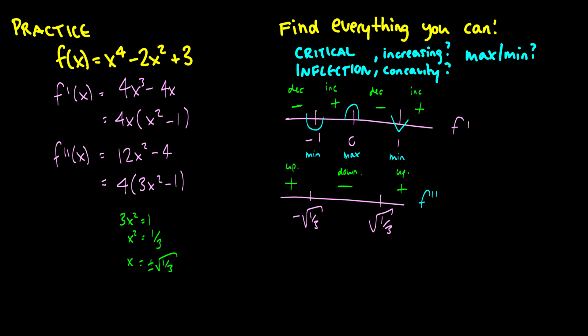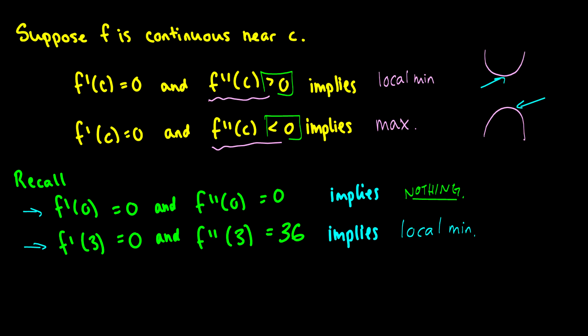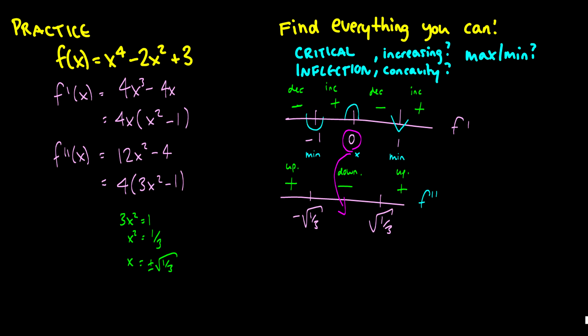To find local maximums and minimums using the second derivative test, we line up our number lines and see where critical points correspond on the second derivative line. At x = 0, the second derivative is negative, which means x = 0 is a maximum — and the first derivative test confirms this too. You don't have to use the second derivative test, but sometimes it's easier, especially if you're just given the data. There are multiple ways to do this — anyway, that is the second derivative test.